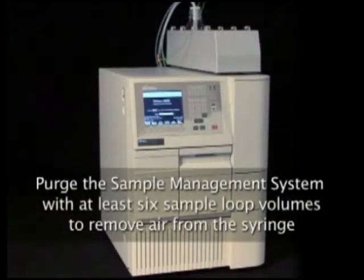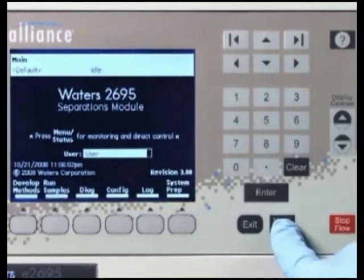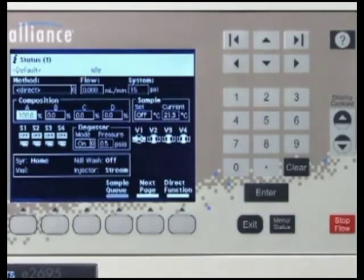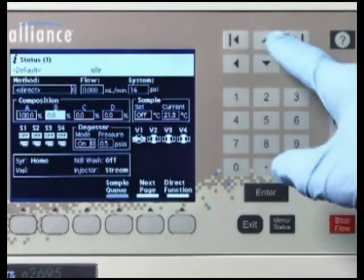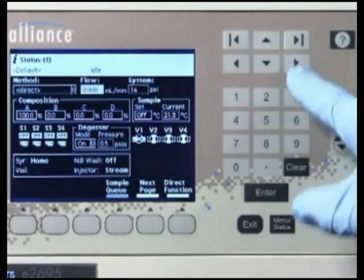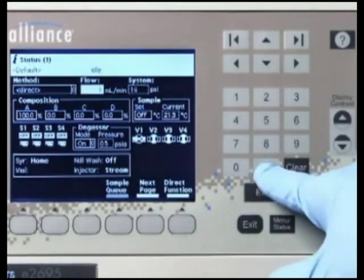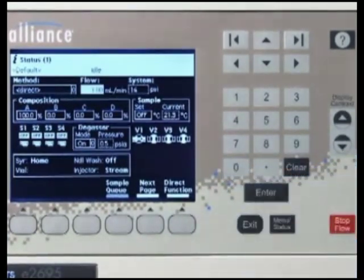Once you have installed a new syringe, purge the sample management system with at least six sample loop volumes to remove any bubbles that may exist in the system. To perform the purge, press the menu status key to display the status screen. Then verify that direct appears in the method field. Set the pump to deliver 1 mL per minute of 100% degassed mobile phase. Next, press the direct function screen key.